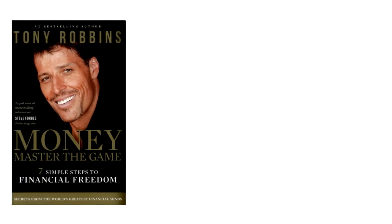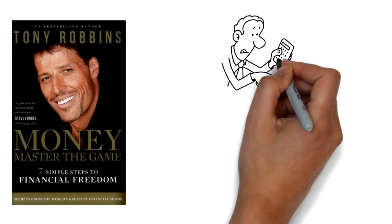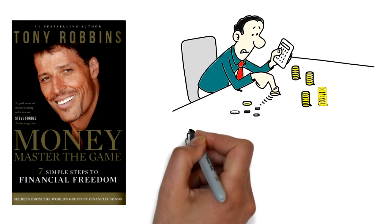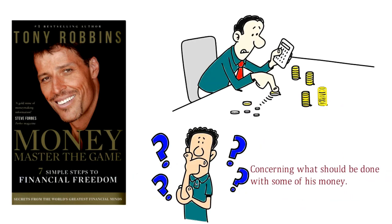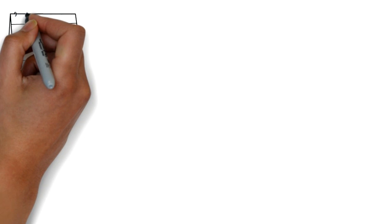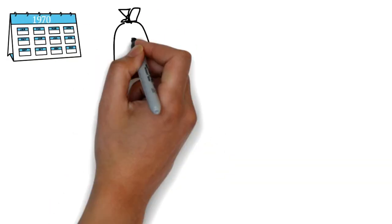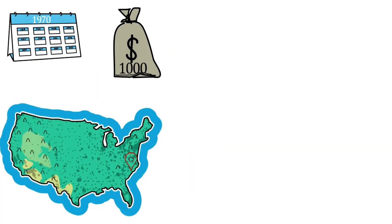In his book Money, Tony Robbins gives us a little history on what Ben Franklin put down in his will concerning what should be done with some of his money. In 1790 he left about $1,000 each to the cities of Boston and Philadelphia. His bequests came with some strings attached.